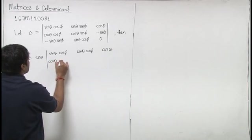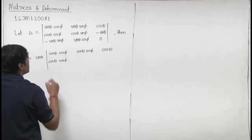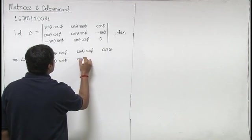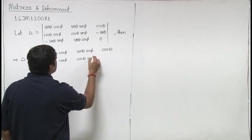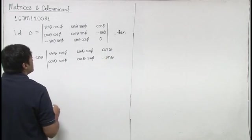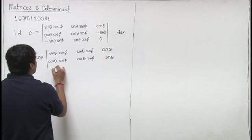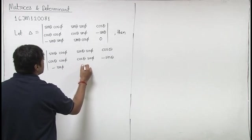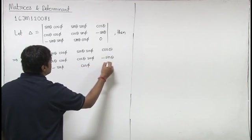It is cos theta cos phi cos theta sin phi minus sin theta. And here, sin theta common is taken. So, we have to take minus sin phi cos phi 0.